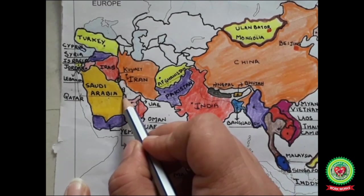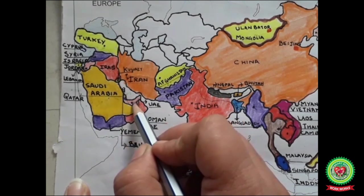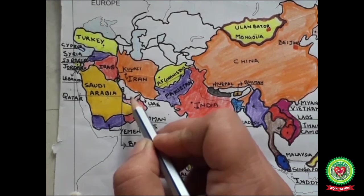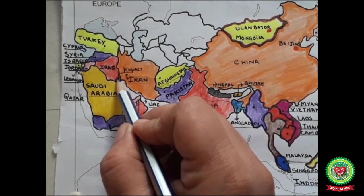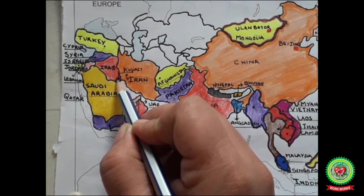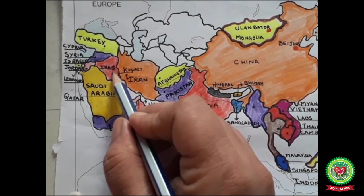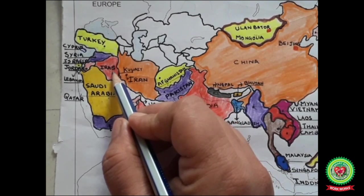Bahrain is a country in Western Asia that consists of a group of islands in the Persian Gulf; capital Manama. UAE — an independent state on the southern coast of the Persian Gulf, west of the Gulf of Oman — capital Abu Dhabi. Kuwait is a country in Western Asia; it borders Iraq to the north and Saudi Arabia to the south. Kuwait is famous for the Liberation Tower; its capital is Kuwait City.